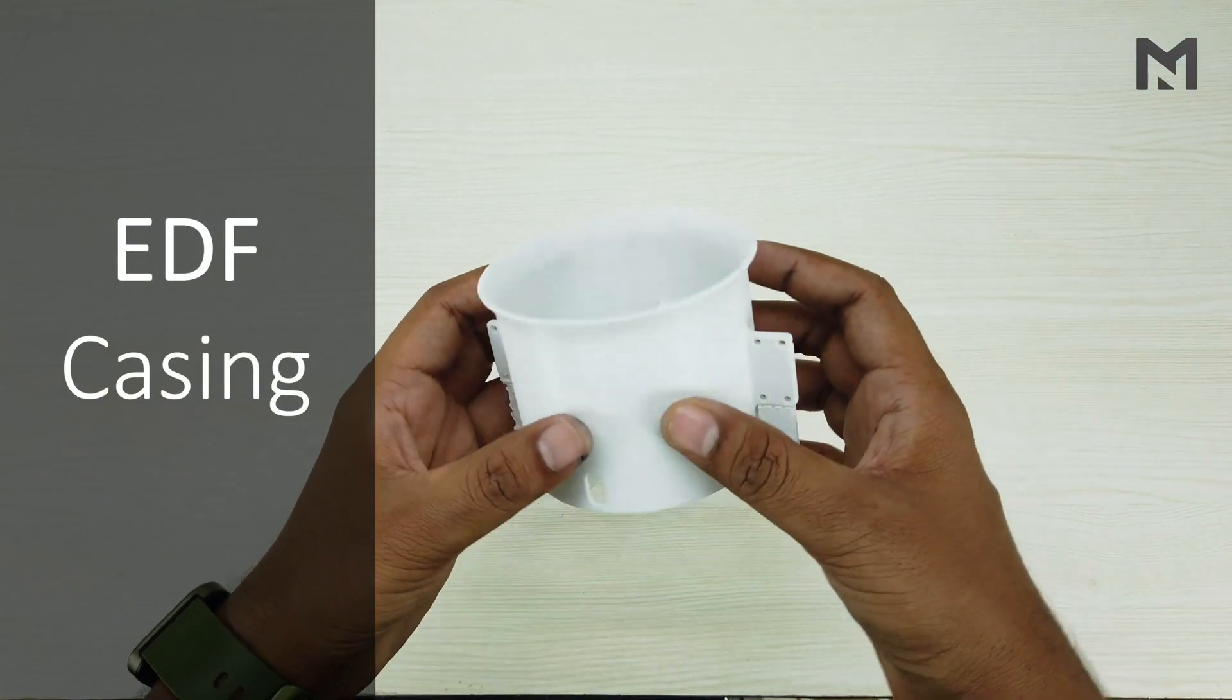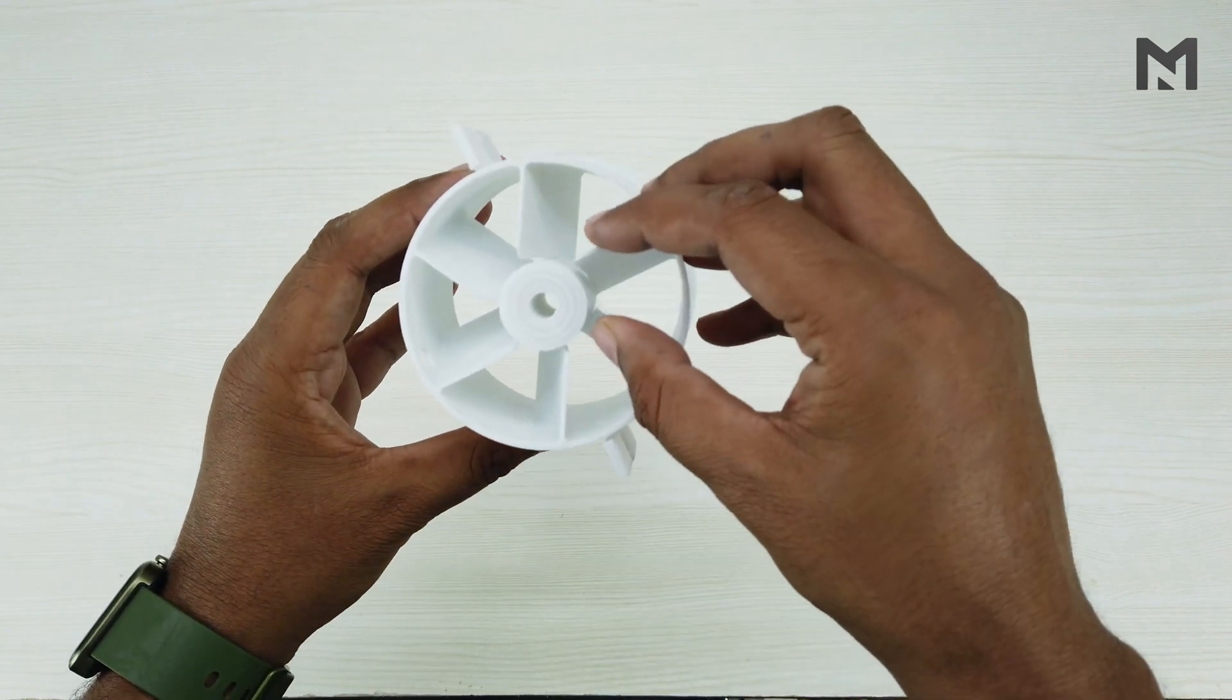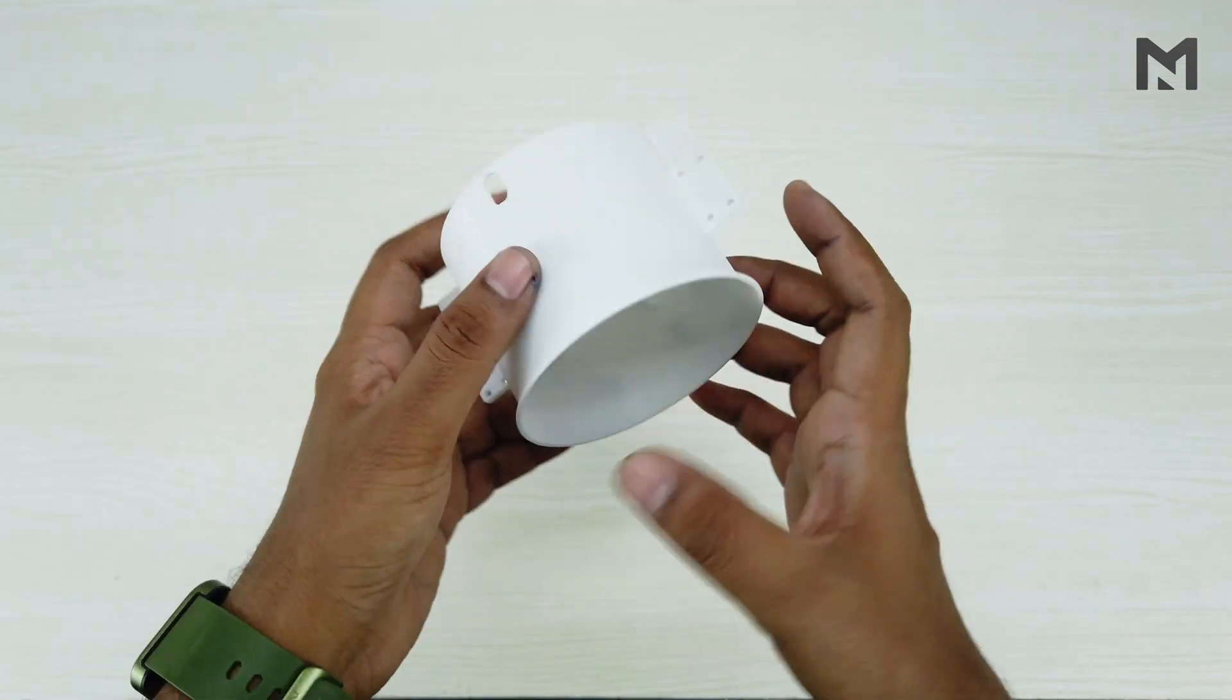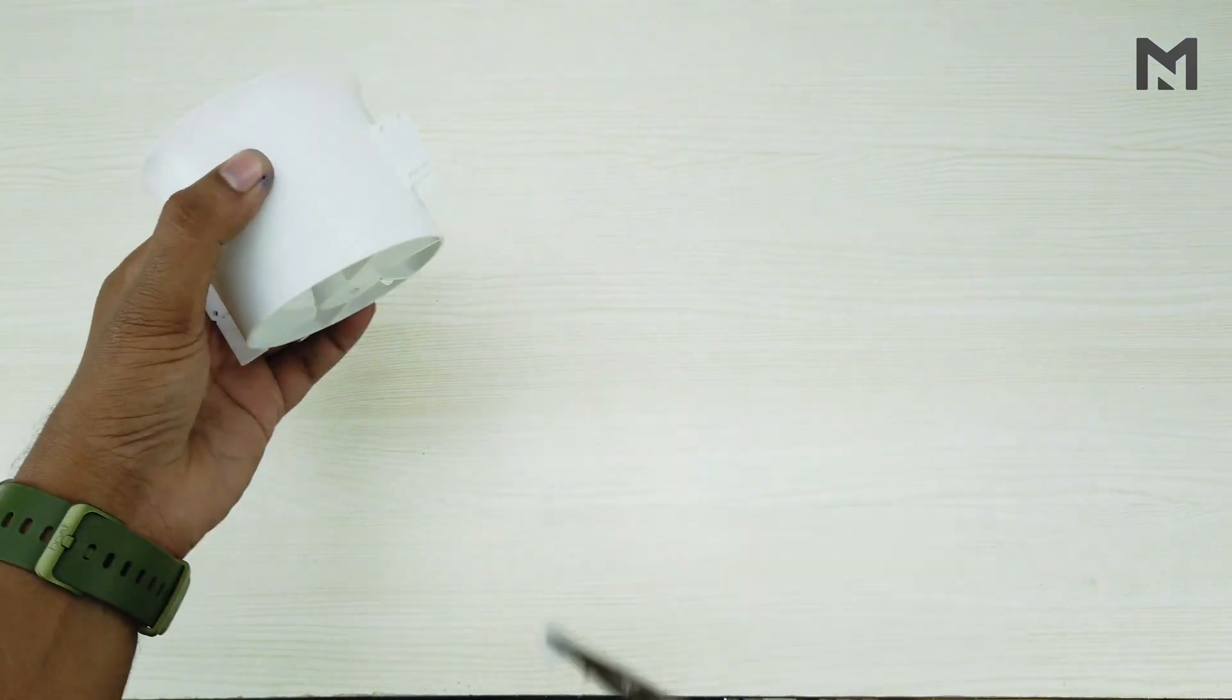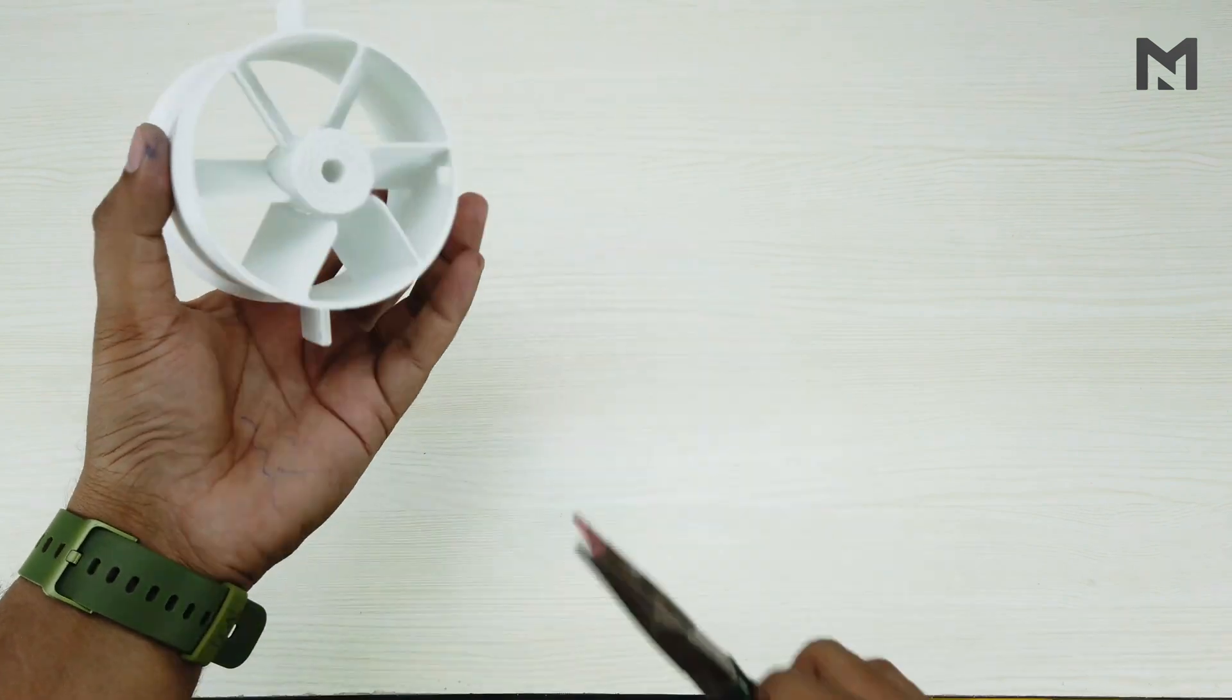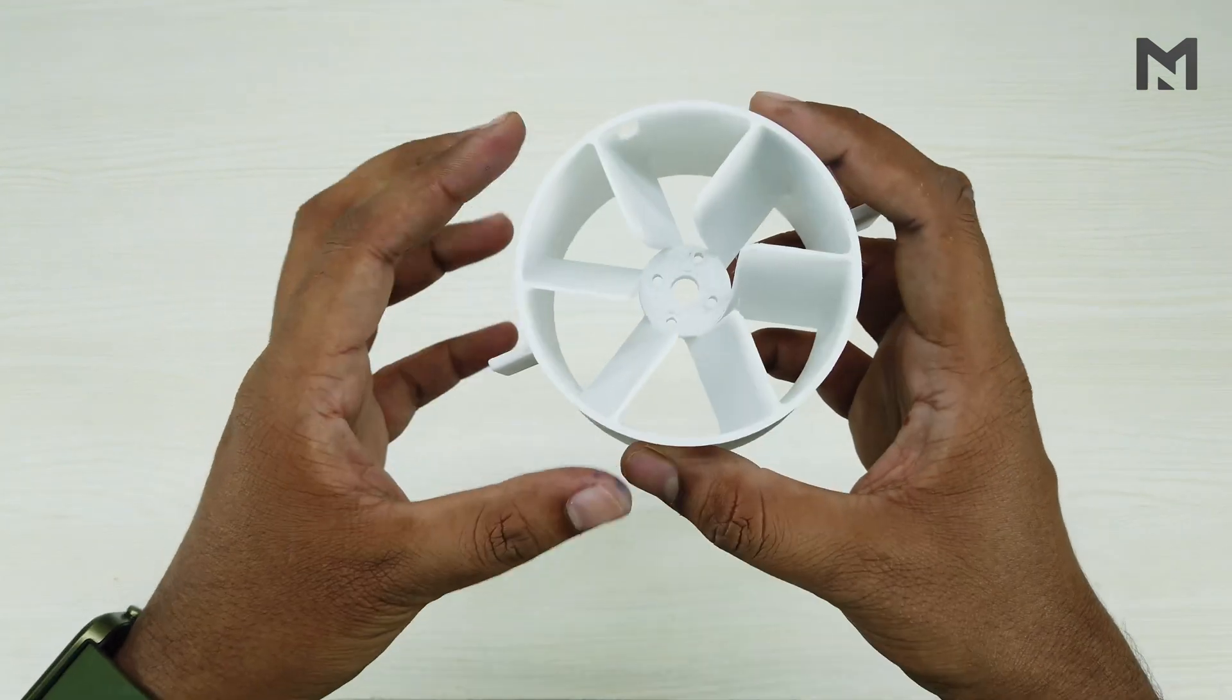This is the new case of the EDF. It has a set of 6 fixed blades. While 3D printing the EDF, make sure to provide support. Take a nose plier to remove the support or you can simply twist it with your hands. Then grab the center support and pull it out.